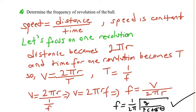Let's move on. Distance is 2 pi R for one revolution. And the time for one revolution is T, period. Period is time for one revolution. Speed becomes 2 pi R over period.